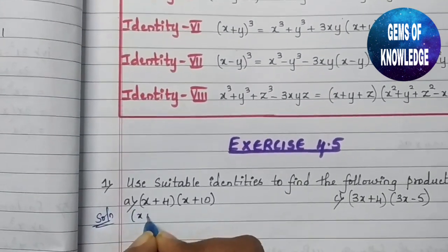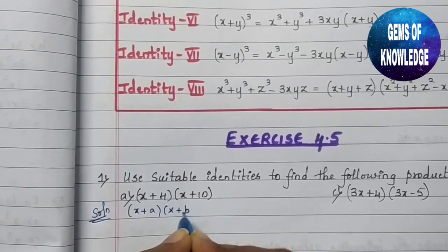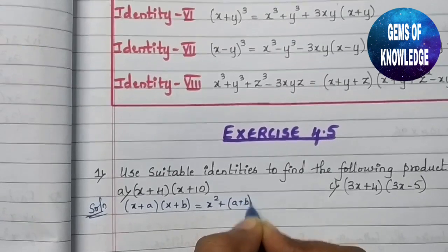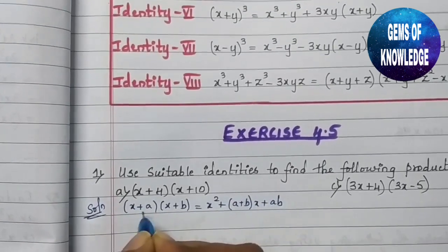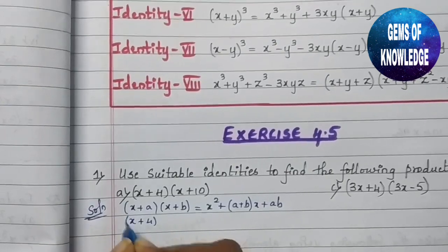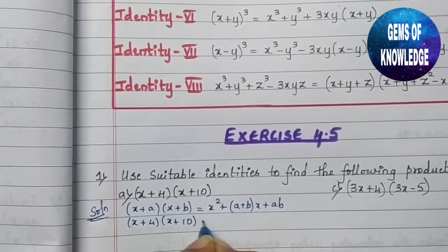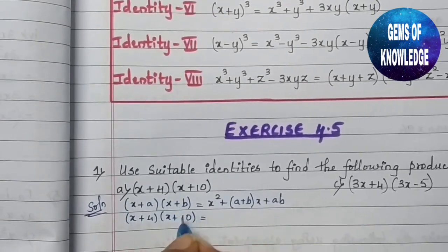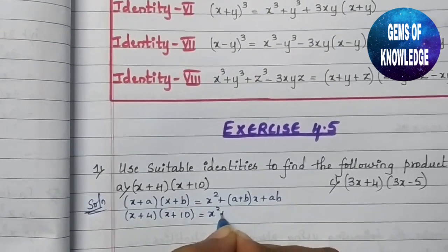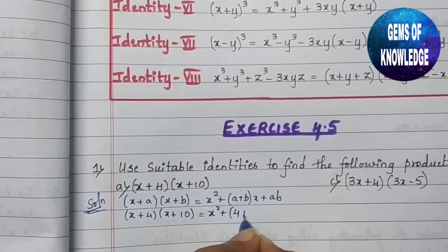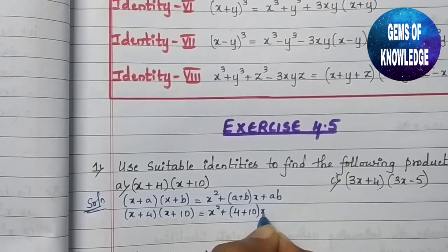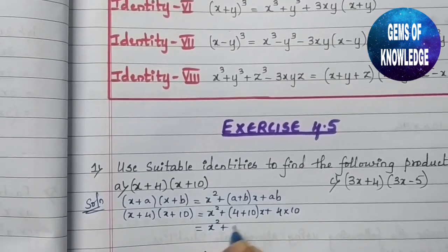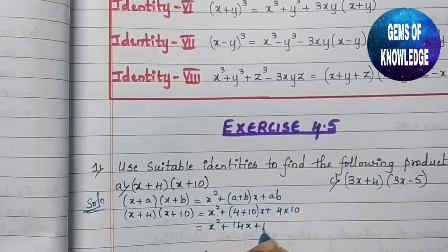Using identity 4: (x + a)(x + b) = x² + (a + b)x + ab. For (x + 4)(x + 10), we identify x as x, a = 4, and b = 10. Substituting: x² + (4 + 10)x + (4 × 10) = x² + 14x + 40.